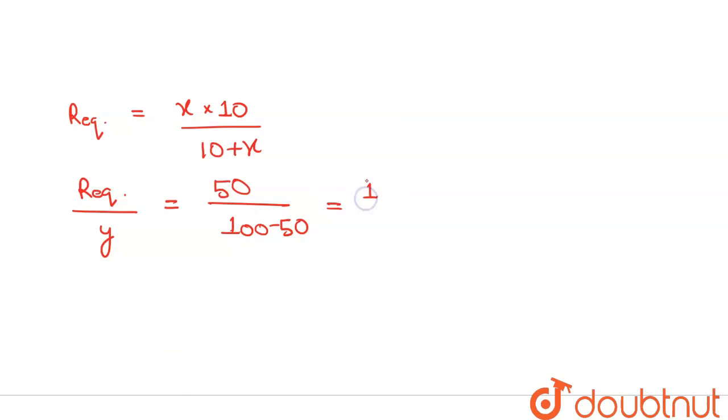This will be 10x over 10 plus x into 1 over y is equals to 1. This is equation 2.